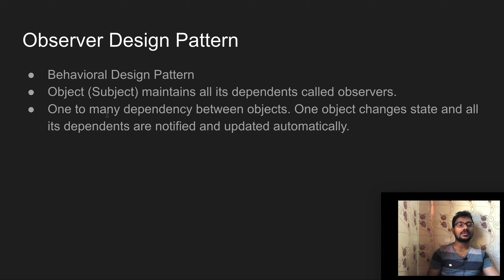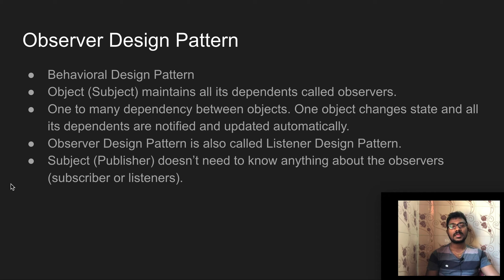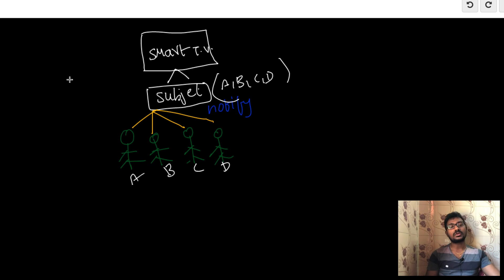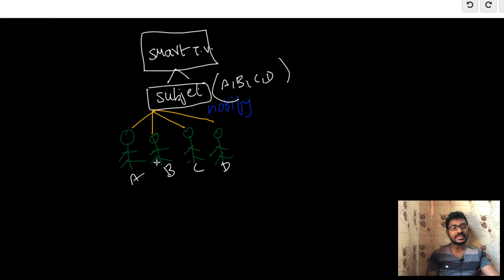One-to-many dependency between objects means one object changes state and all its dependents are notified and updated automatically. Another point is the subject or publisher doesn't need to know anything about the observers or listeners. The subject doesn't maintain all the information about observers — it won't maintain personal data like name, age, or date of birth.